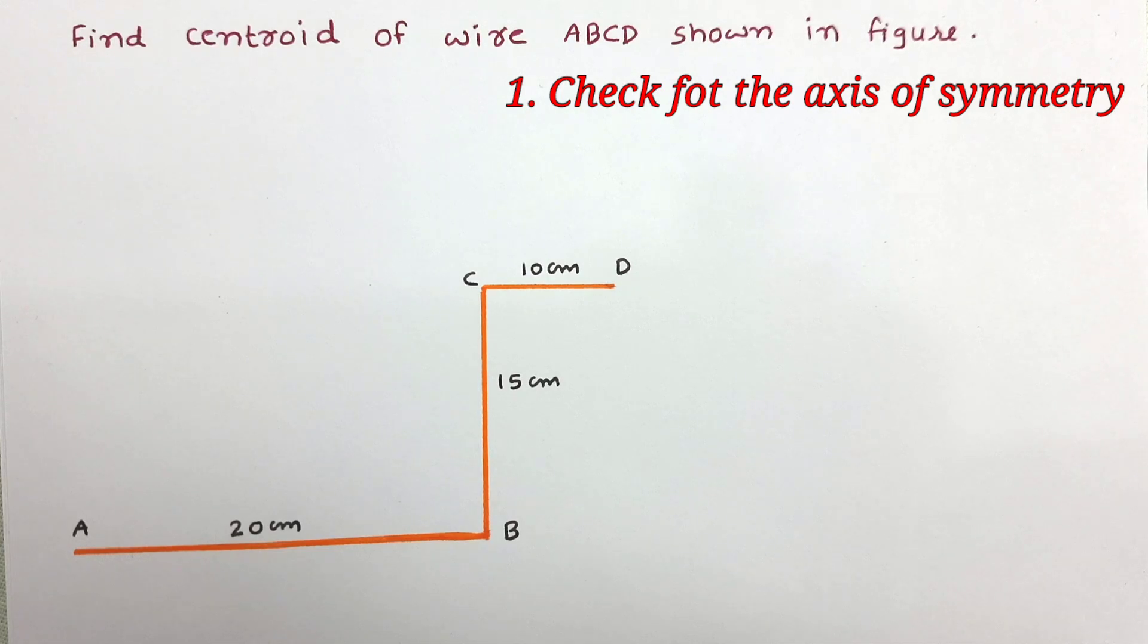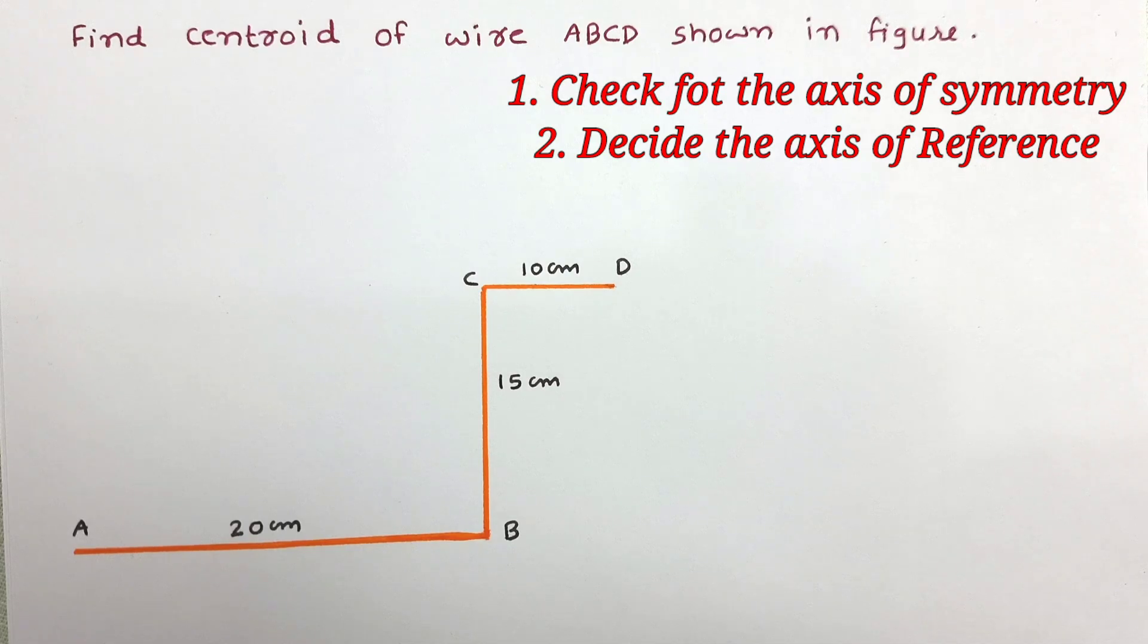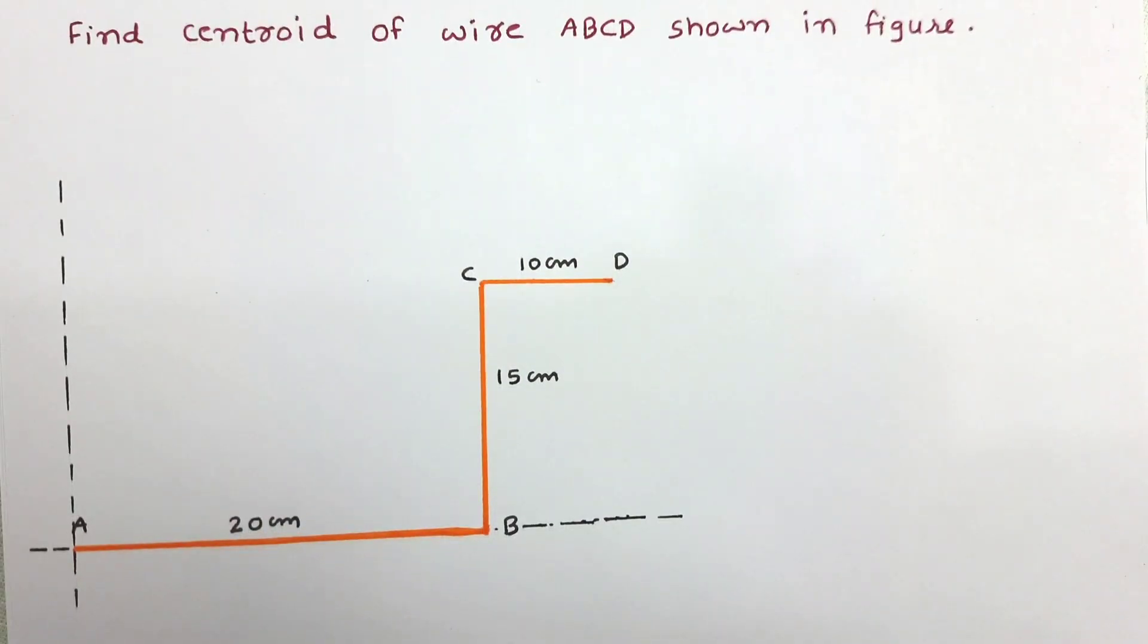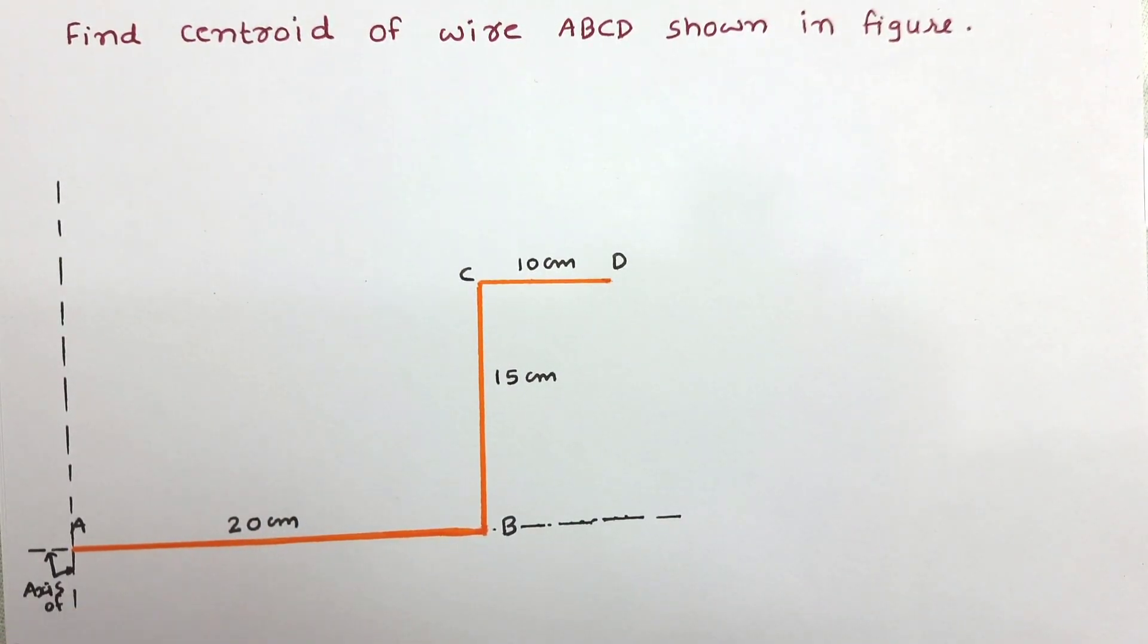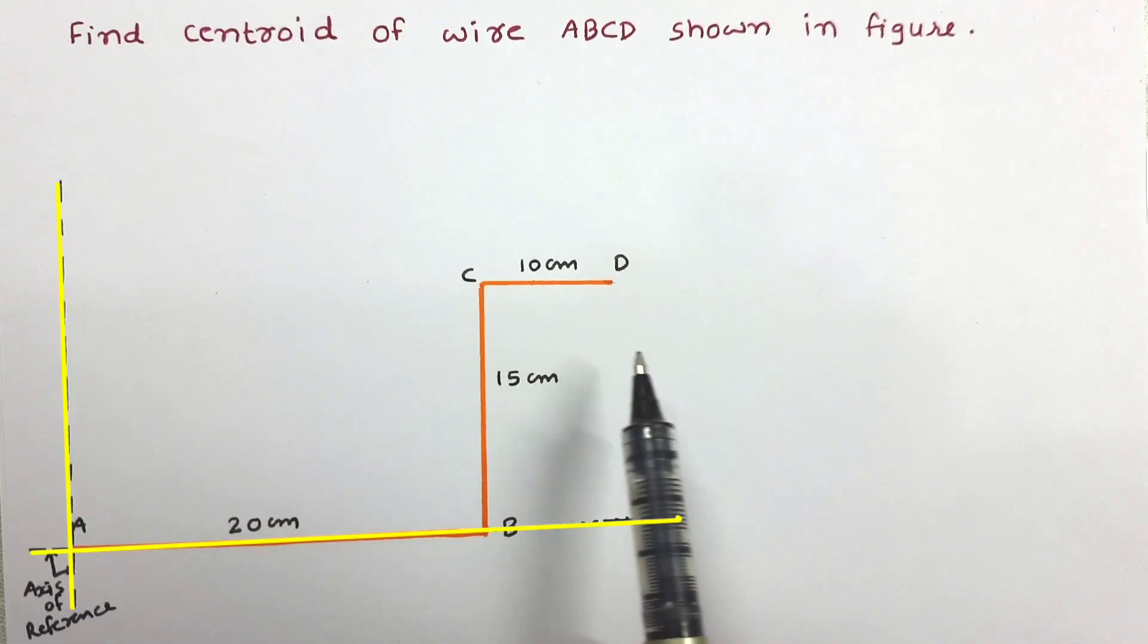So let us move to the next step. In the second step we need to finalize the axis of reference. Axis of reference should be selected in such a way that the figure remains in the first quadrant. So here the axis of reference is selected in such a way that the figure is now in the first quadrant.